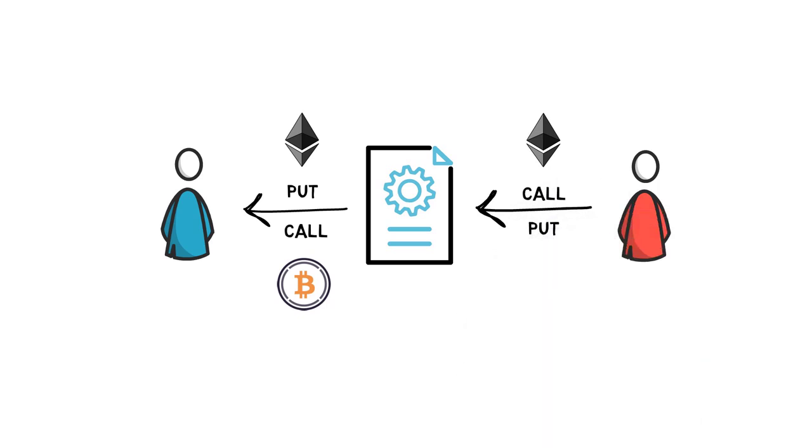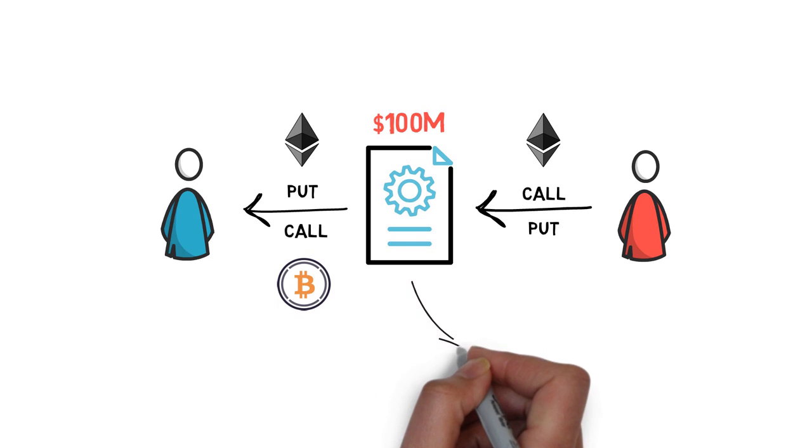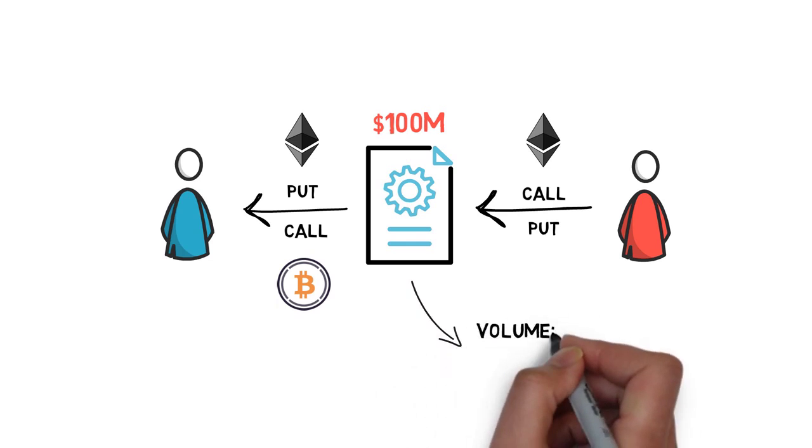Three months after the launch, Hegic had almost $100 million in total value locked in the protocol, a total cumulative options trading volume of around $168 million and generated over $3.5 million in fees.